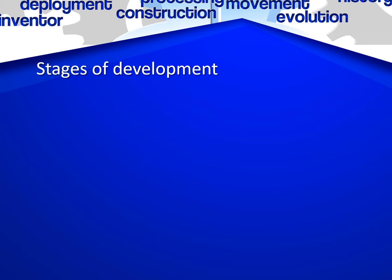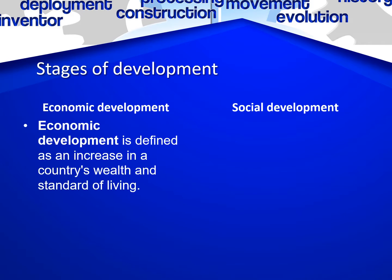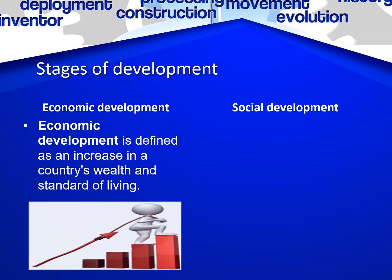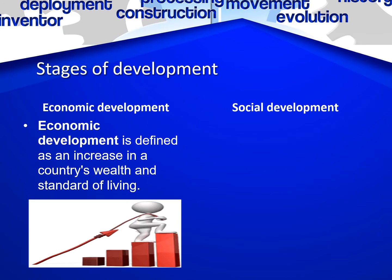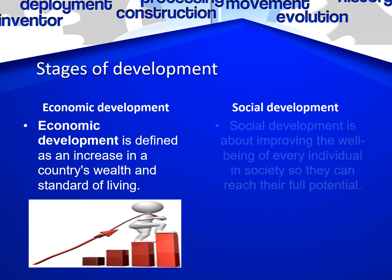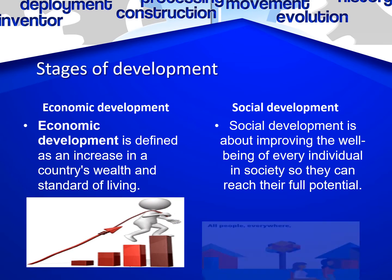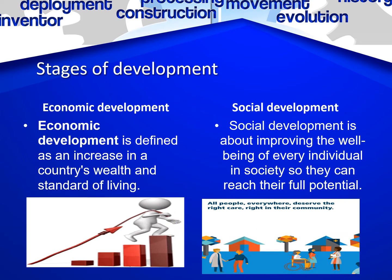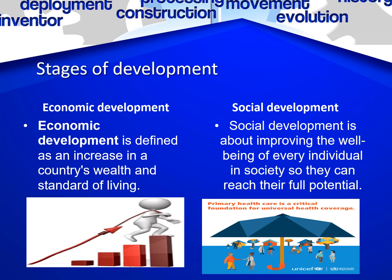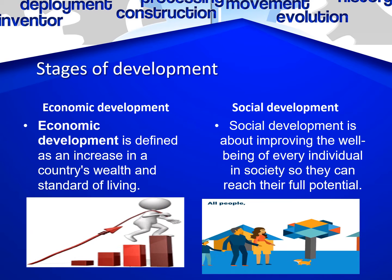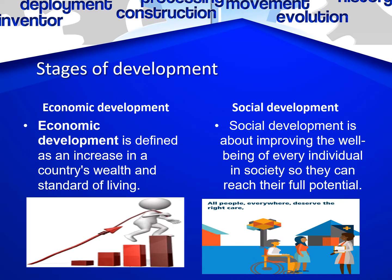There are two stages of development: one is economic and the other is social development. Economic development is defined as an increase in a country's wealth and standard of life. Social development is defined as improving the well-being of every individual in society so they can reach their full potential. Social development relates to society and economic development relates to the economy of the country.